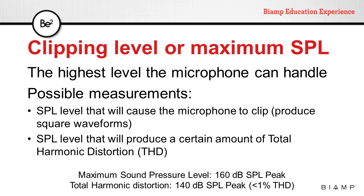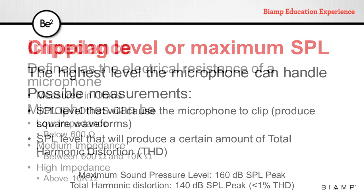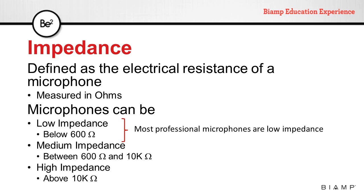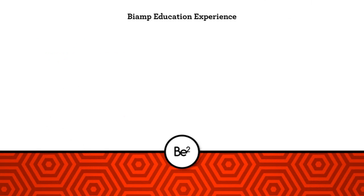Another example is a microphone that specifies less than 1% total harmonic distortion at 140 dB SPL. Impedance is defined as the electrical resistance of a microphone, measured in ohms. In the AV industry, we divide impedance into three groups: low impedance (below 600 ohms), medium impedance (between 600 ohms and 10 kilo-ohms), and high impedance (above 10,000 ohms). Most professional microphones are low impedance.